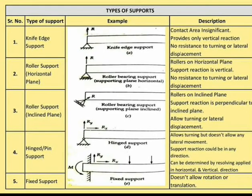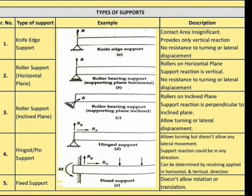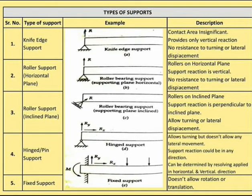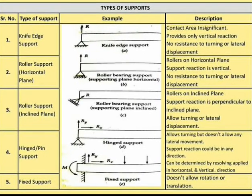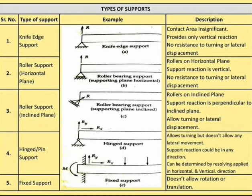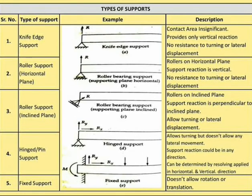Next is a roller support on an inclined plane. The support reaction is perpendicular to the inclined plane, and both turning and lateral displacement are allowed. The fourth type is the hinge or pin support. It provides both vertical reaction Ry and horizontal reaction Rx. Turning is allowed, but lateral movement is not allowed.